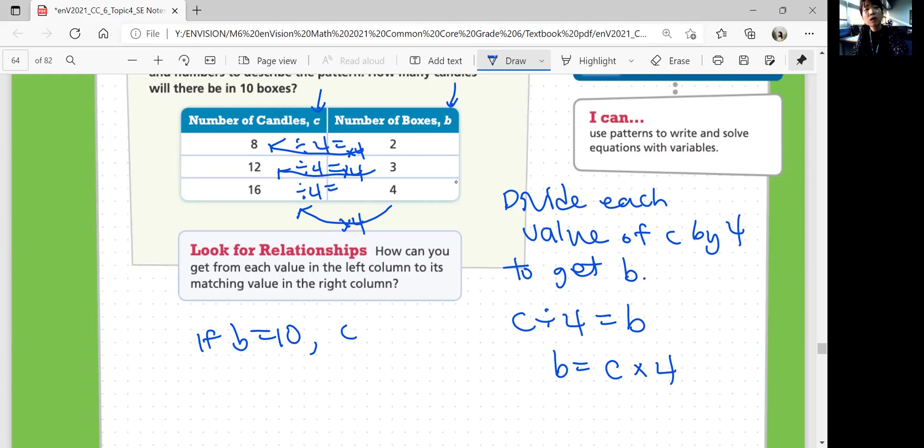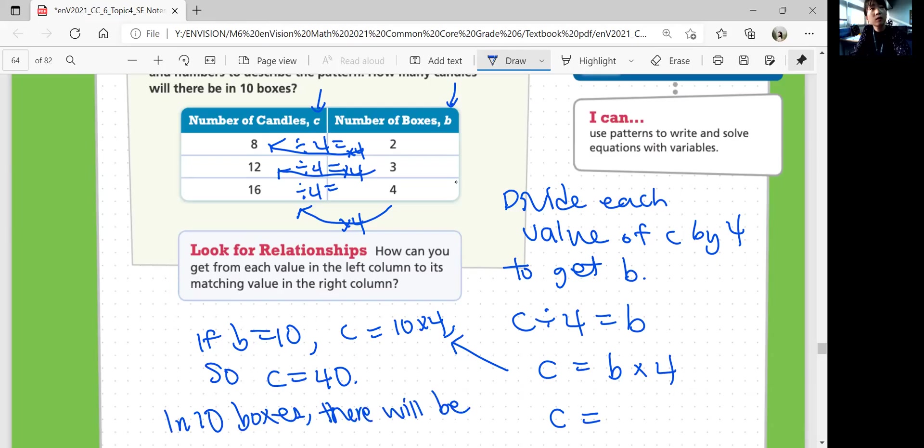No, wait. B is equal to C divided by 4. C is equal to B times 4. So if B is 10, C is equal to 10 times 4. So C, in 10 boxes, there will be 40 candles.